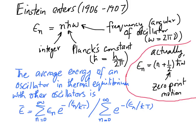Given this expression, we can now compute the average energy of an oscillator in thermal equilibrium with all the other oscillators using statistical mechanics. The expression for epsilon bar is exactly that. The exponential factor e to the minus epsilon n over kT is a probability factor. When you perform the two summations and evaluate this expression, you get the average energy of an oscillator.